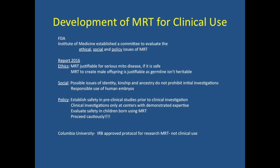Regarding social issues, they said there were possible issues of identity, kinship, and ancestry, but that did not prohibit initial investigations. They were really concerned about responsible use of human embryos. Their policy recommendations include: establish safety in preclinical studies prior to clinical investigations, evaluate safety in children born of MRT with long-term follow-up, conduct studies only at centers with demonstrated experience in MRT, and proceed very cautiously. We at Columbia University have an IRB-approved protocol for research in MRT — not for clinical use, but for research — where we would freeze those zygotes. If we do get FDA approval at some point, those could be taken out of the freezer and used, but it's not approved yet.